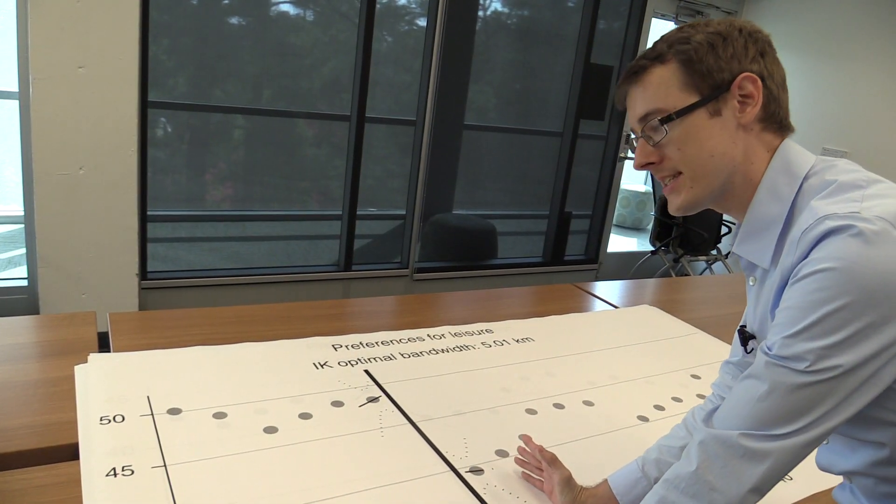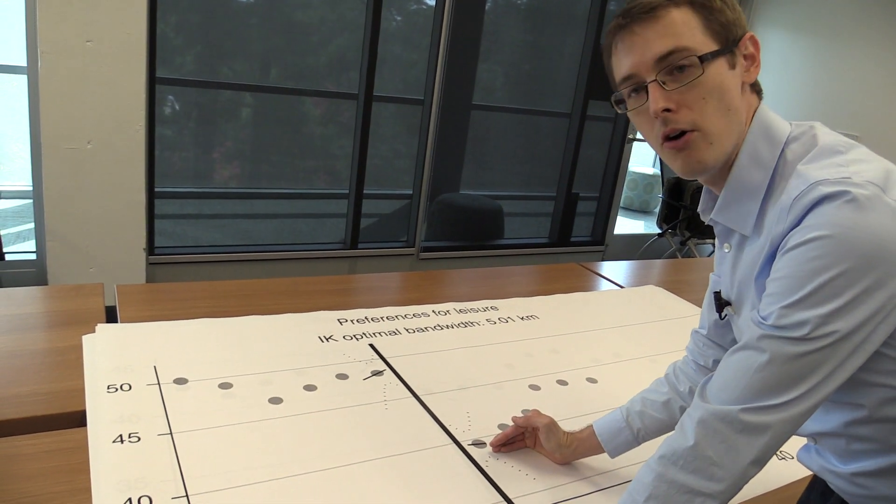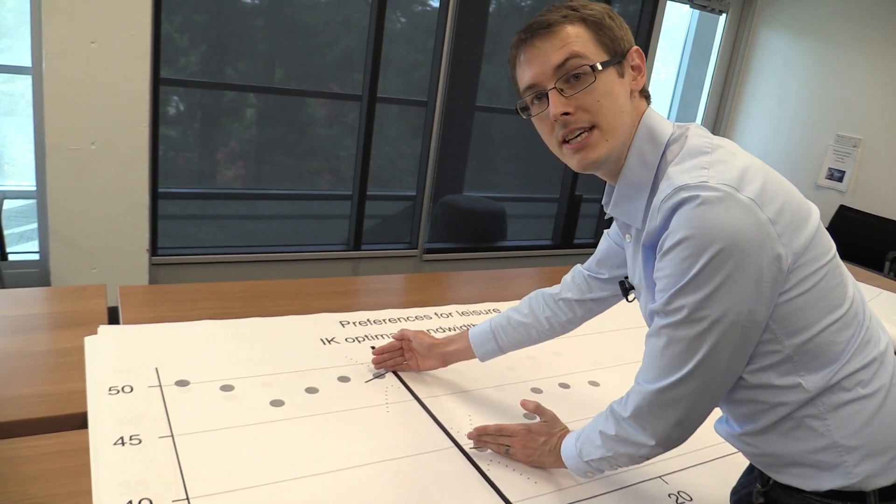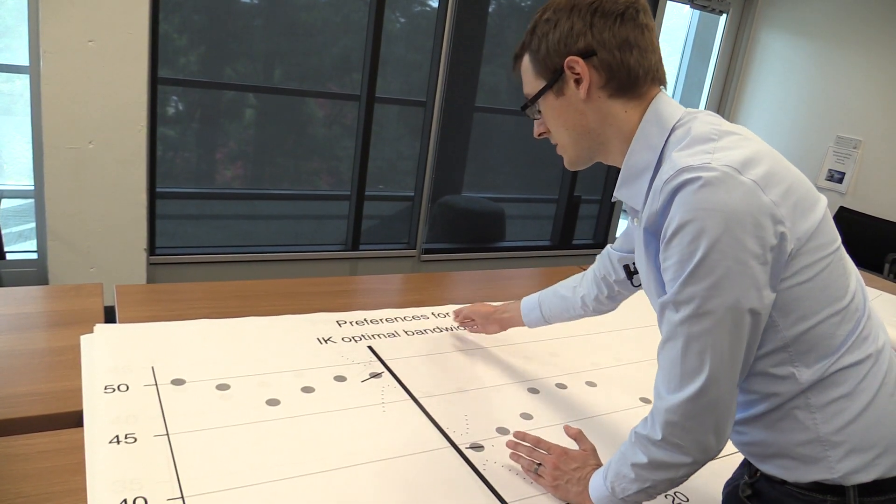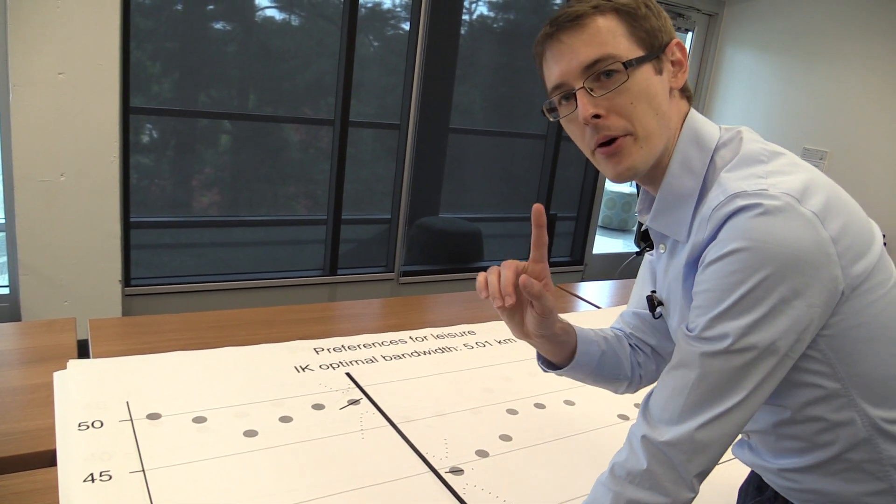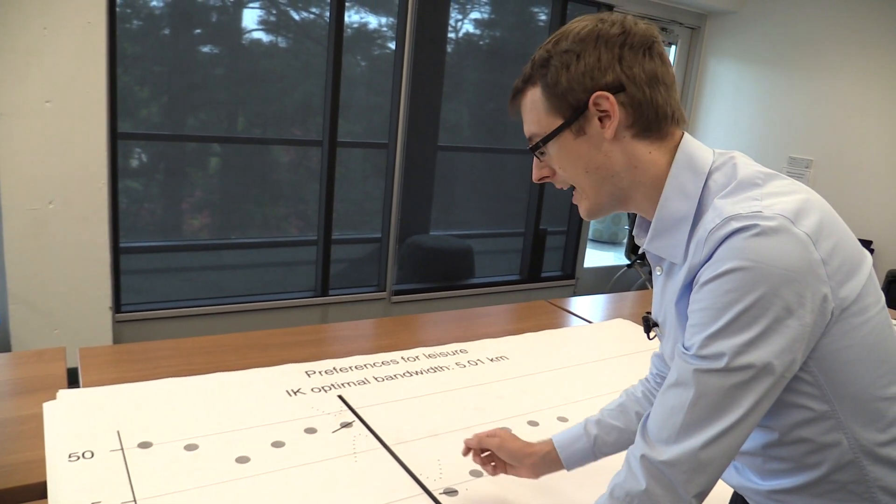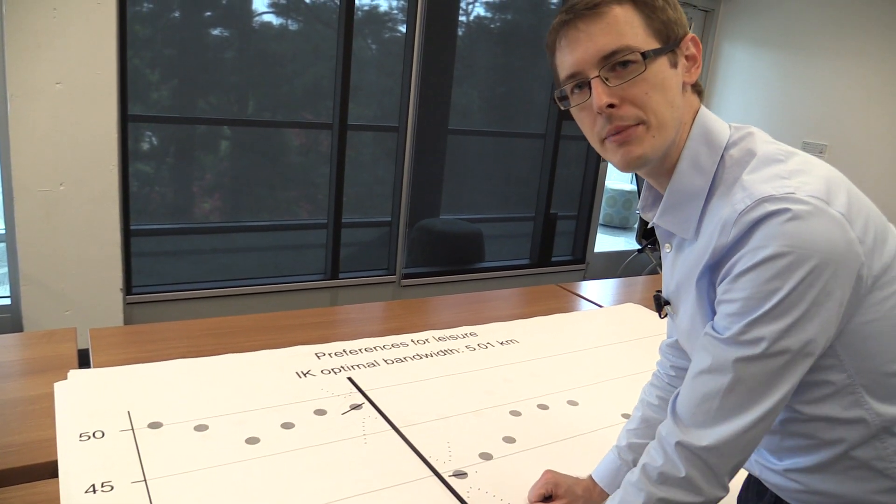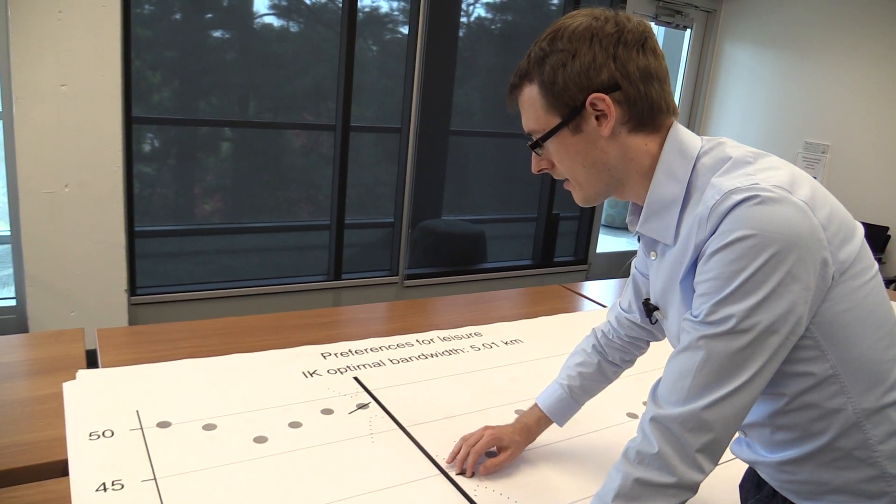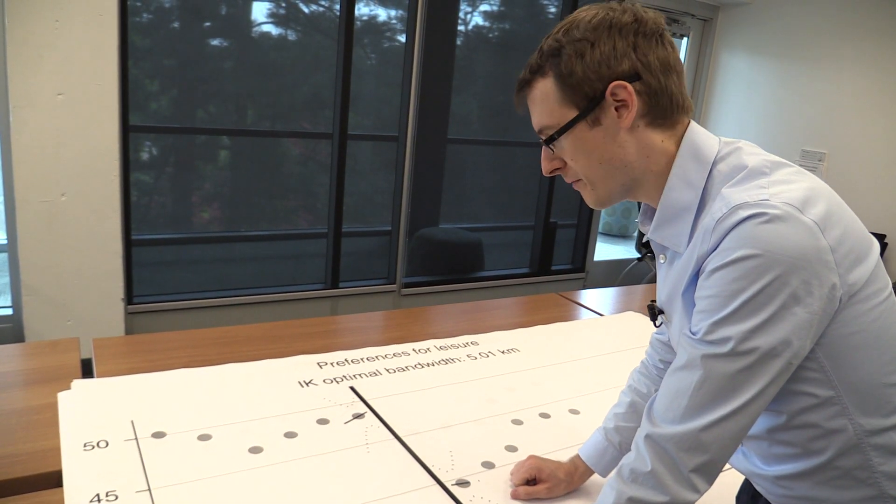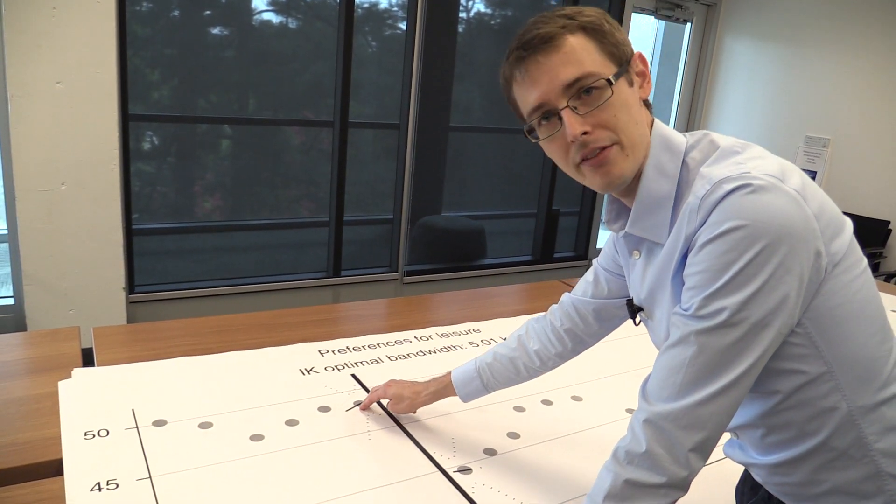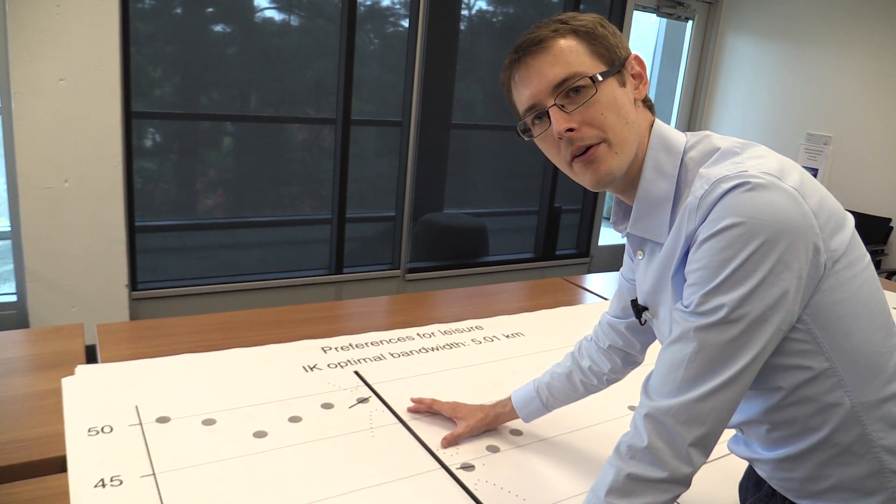And then over here on the Protestant side, however, it drops all the way down to 39%. So we see that there's about a 9% difference in their preferences for leisure just by where you are, which side of the border you're on. And remember, the whole idea of RDD is that because the border basically determines your treatment, whether you're Protestant or Catholic, this difference here is solely explained by the fact that these municipalities are Protestant and these are Catholic. So this is a causal effect.